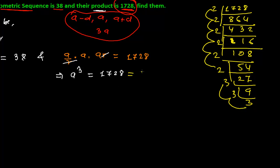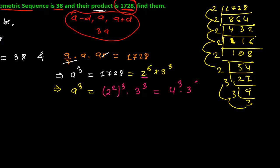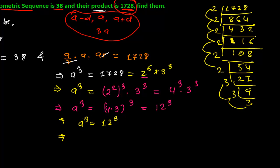So 1728 = 2⁶ × 3³. I can rewrite 2⁶ as (2²)³ = 4³, so a³ = 4³ × 3³ = (4×3)³ = 12³. Since the powers are the same and both sides are equal, their bases must be equal, so a = 12.